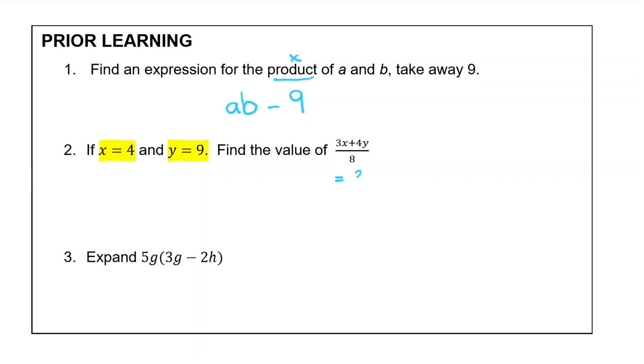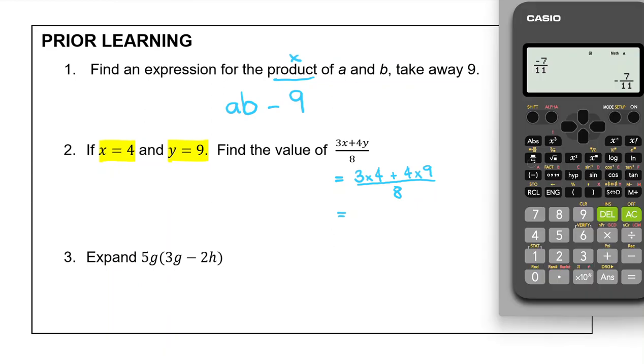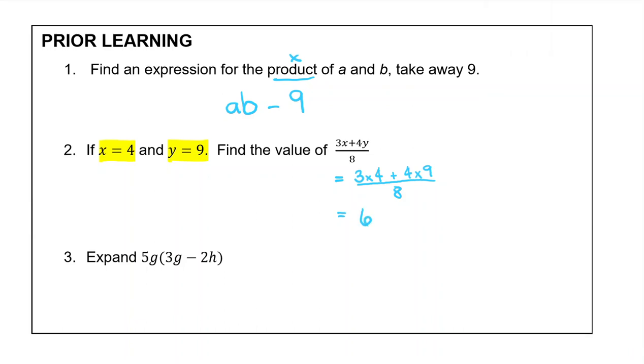So that will be 3X will be 3 times 4 plus 4 times Y, which is 9, over 8. The second line is that we're going to put that in our calculator to find out what it equals. So we have 3 times 4 plus 4 times 9, over 8, and we get the answer which is 6.